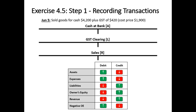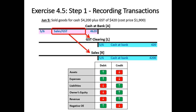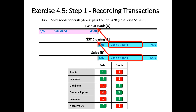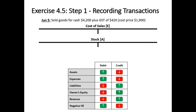Sold goods for cash: $4,200 plus GST of $420, cost price $900. Let's deal with the sale amount first. The business has got more cash so that'll be a debit going up — $4,620. We've collected GST so that's a liability, and we've made revenue in sales so that'll be a credit for $4,200. The one debit equals the two credits. In the debit reference we're doing sales slash GST, and both credit references will just reference the cash at bank ledger.